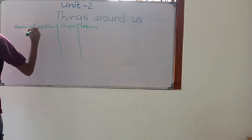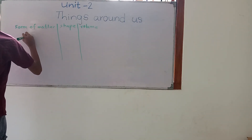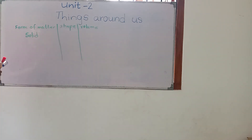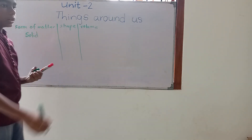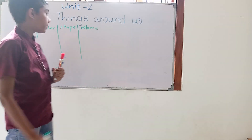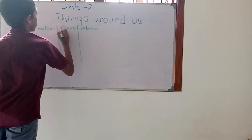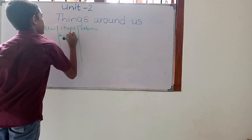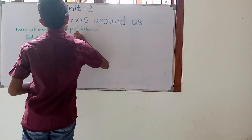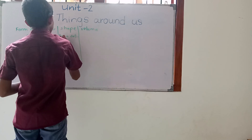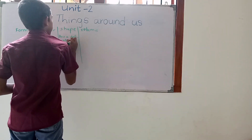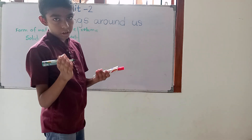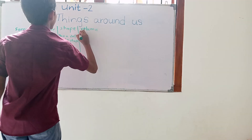From the form of matter, we can find the first one: solid. Does solid have a shape? It has a definite shape. Does it have volume? Yes, a definite volume.